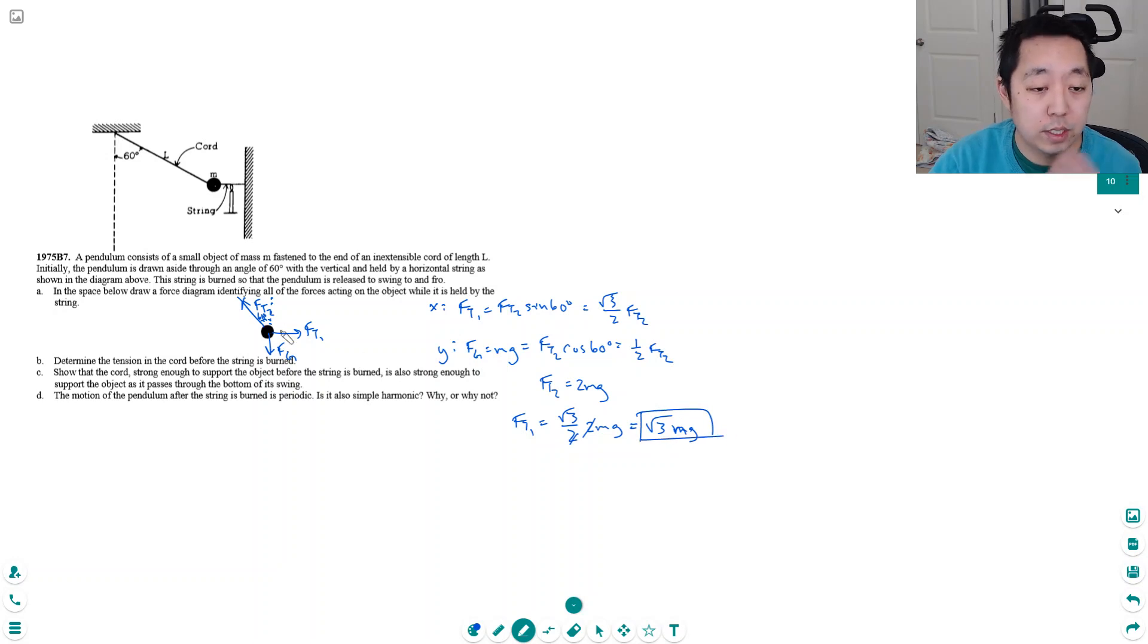Show that the chord strong enough to support the object before the string is burned is also strong enough to support the object as it passes through the bottom of its swing. Well, let's calculate what FT2 is. FT2 is 2 mg. So what we want to know is what is the tension in this chord as it swings through the bottom here.